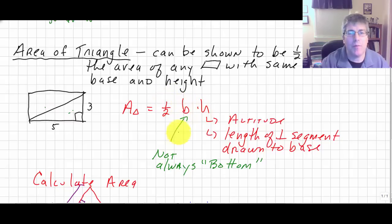The base is not always the bottom, but the side to which the altitude is drawn. And the height is the altitude, or the length of the perpendicular segment drawn to the base.